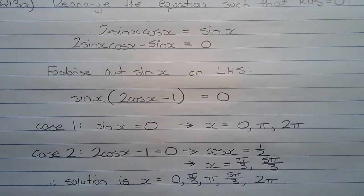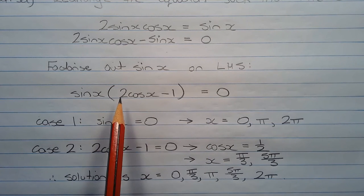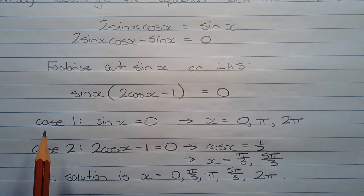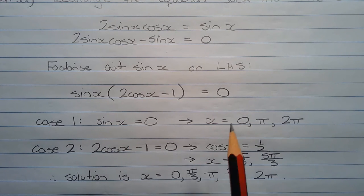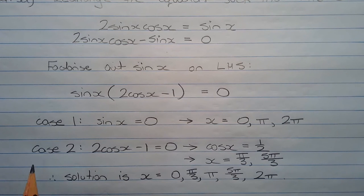This gives rise to two cases: either sine x equals 0 or 2 cos x minus 1 equals 0. For case 1, sine x equals 0, we have x equals 0, pi, or 2 pi.